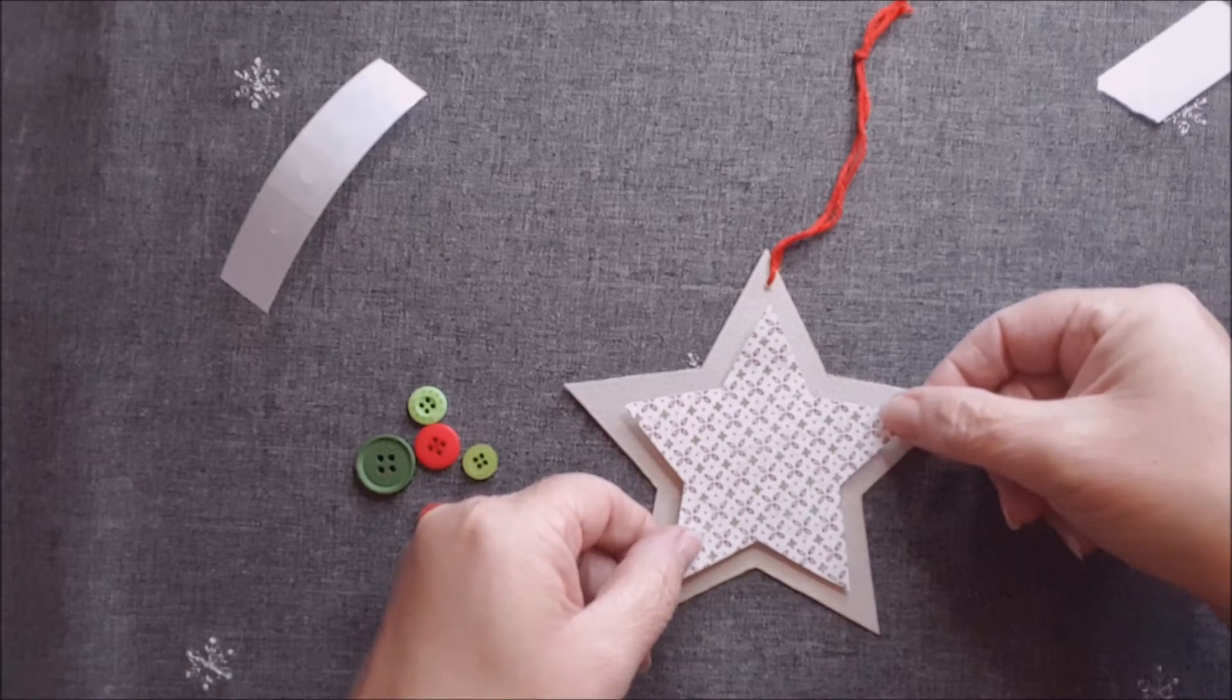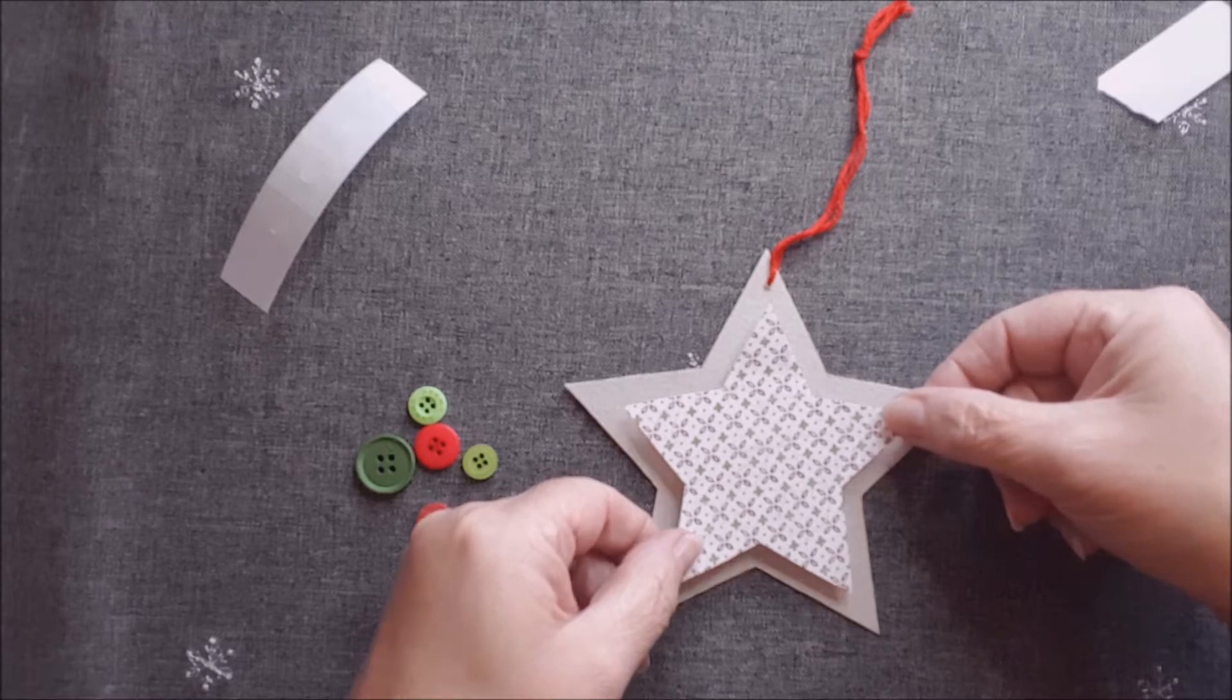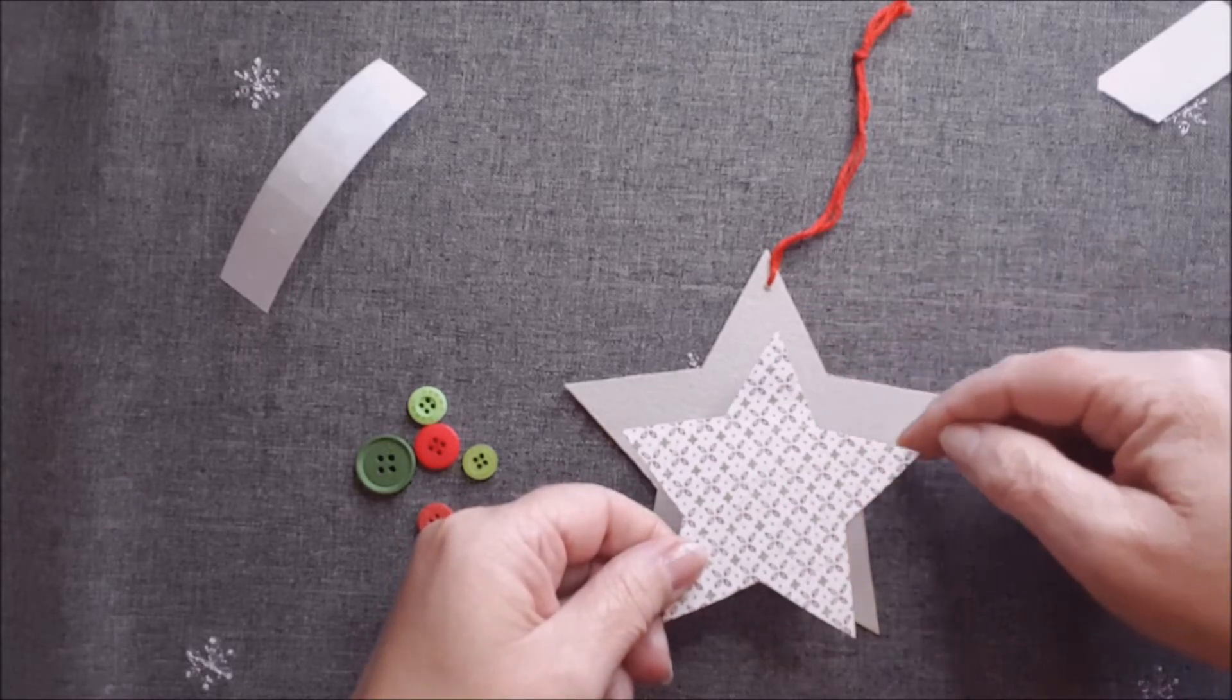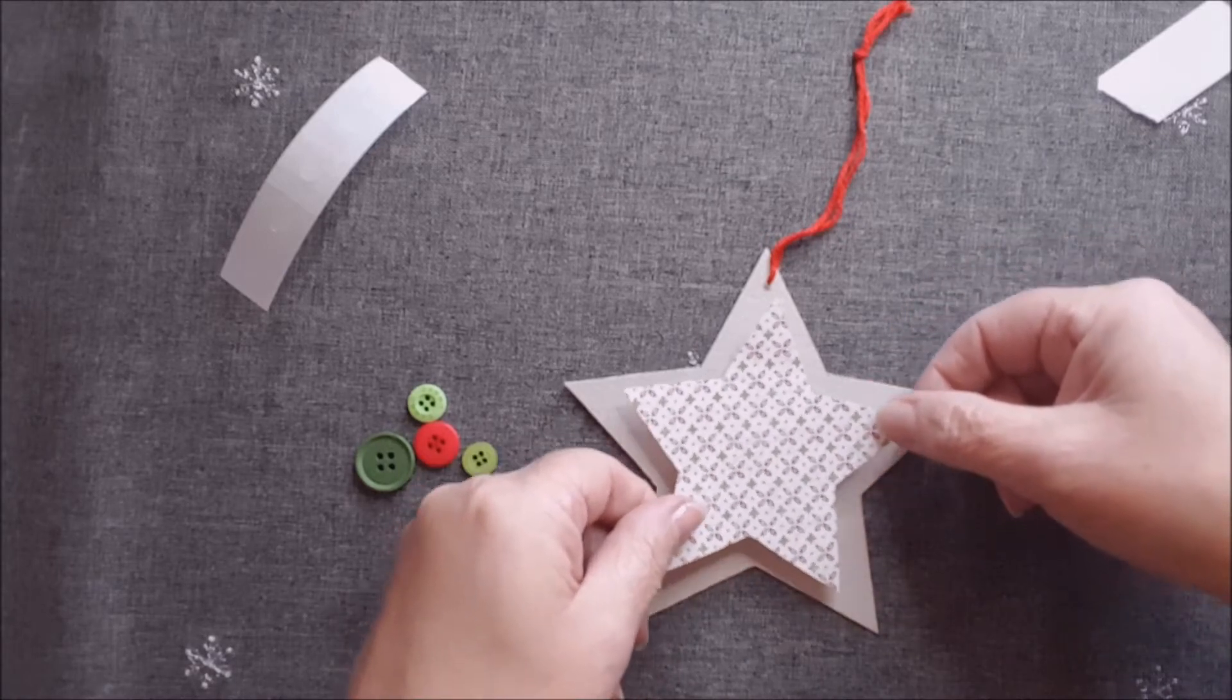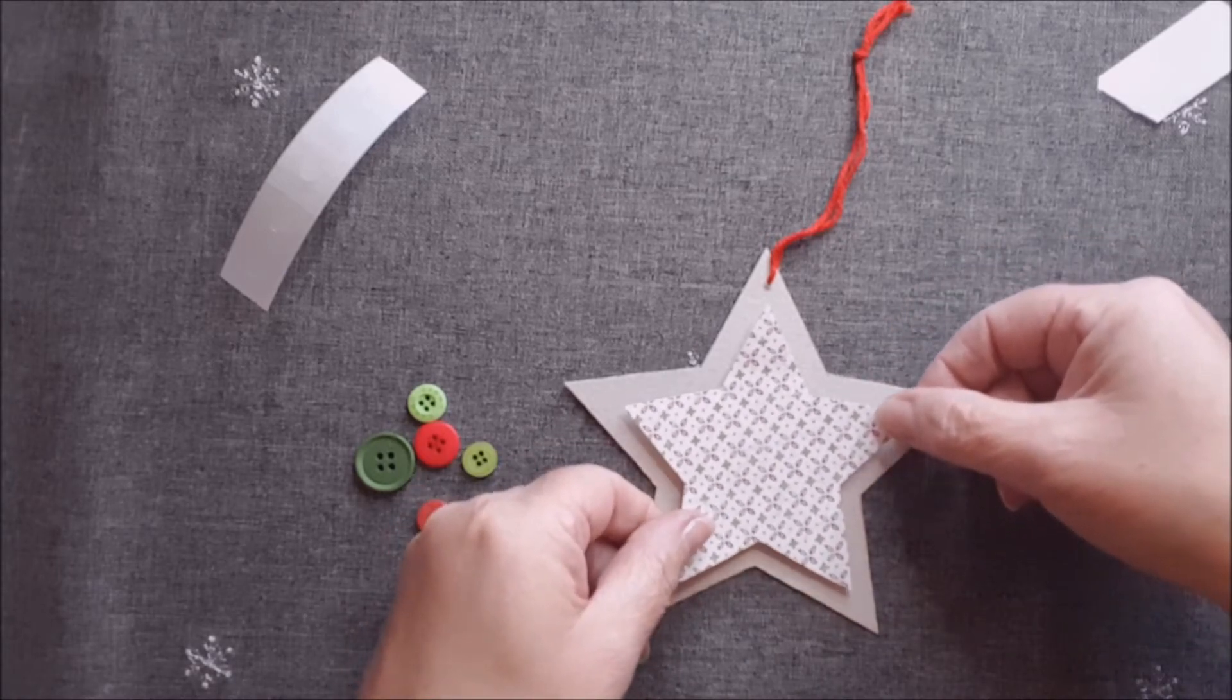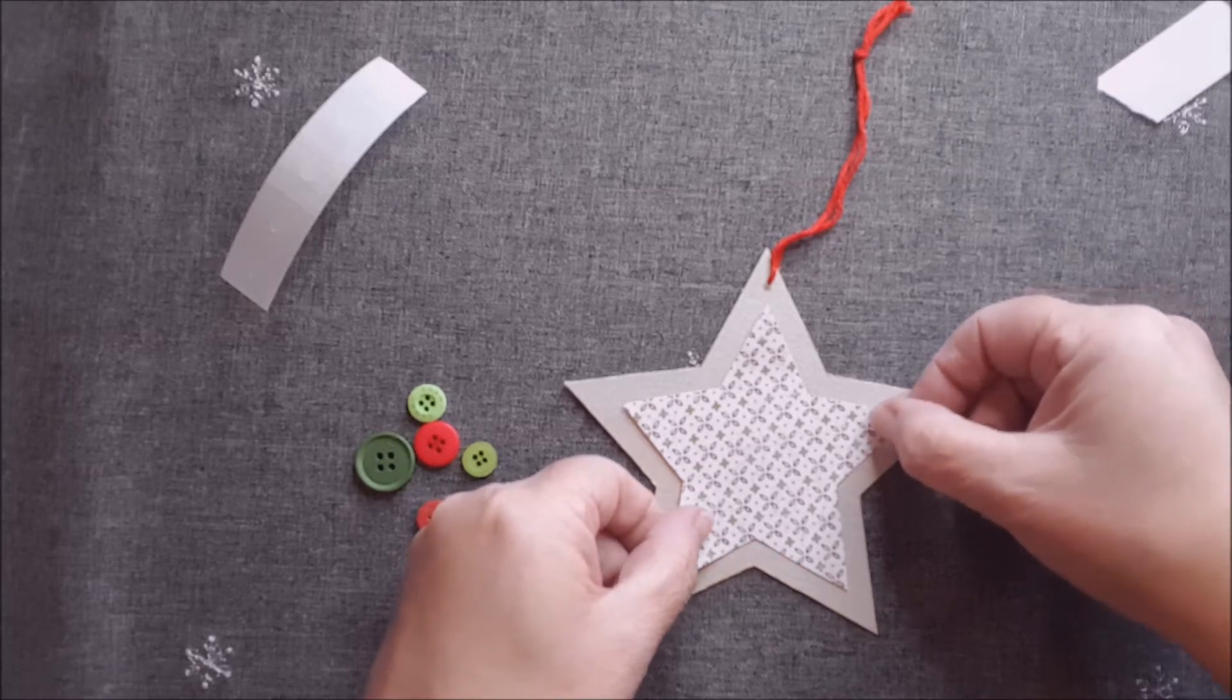And then we're going to line this star up with our cardboard star. You can see it's a little bit smaller so it will fit inside. We want to make sure we've got a nice little border of card all the way around it. Try not to stick it on an angle or wonky, try and get it nice and straight. So I think that's about right in the middle, so I can stick that on our cardboard star.